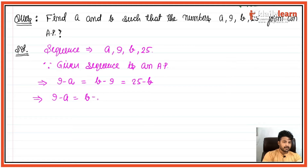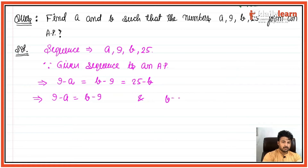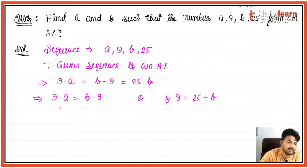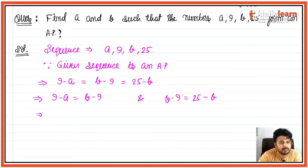Kissi bhi do ko main equate karke equation bana lunga. Pehla: 9 minus a is equal to b minus 9. Doosra: b minus 9 is equal to 25 minus b. Toh main baad wale dono solve karta hoon.